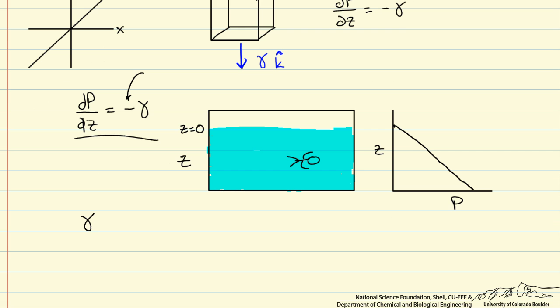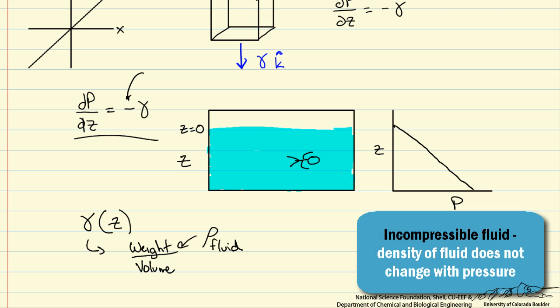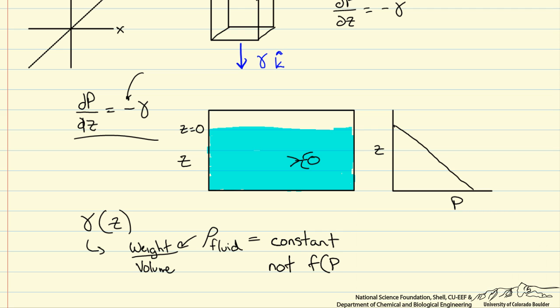So the question becomes how does the specific weight vary as a function of z and can it? Well since the specific weight is a weight per volume this is going to be a function of the density of the fluid. So if the density changes with elevation then the specific weight will change with elevation. So for this video let's just focus on incompressible fluids in which the density of the fluid is constant. In other words not a function of pressure.